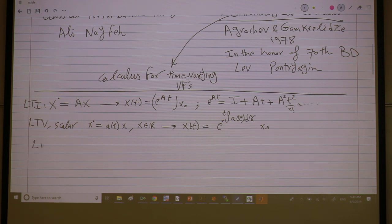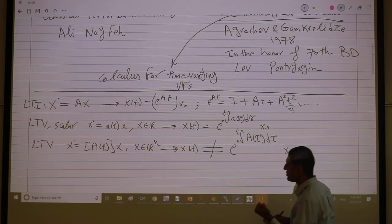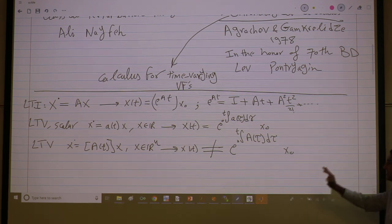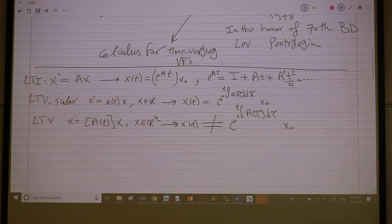But LTV in general, so x in R^n, this is A of t. The solution is not, in general, the exponential of the matrix which is the integral of your matrix. It's not like this. It's in very special cases where A of t is just a function of time times a constant matrix. Yes, you can do that. Otherwise, it's not the case.